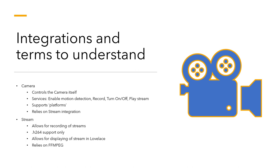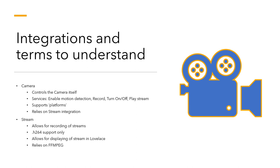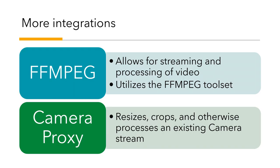Before we get started, let's talk about the terminology. The camera integration controls the camera - it turns it on and off. The camera integration relies on the stream integration to actually show the video. The stream integration only supports H.264, which means if you want to use the camera and stream integrations directly, you cannot use a 4K camera - most of those use H.265 encoding. The stream integration allows you to record streams and display them in Lovelace, and it relies on yet another integration called FFmpeg.